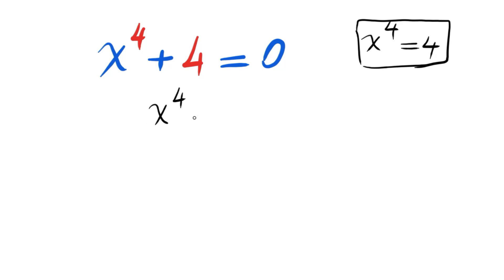Now if we write this as x to the 4 equals minus 4, we will see the roots should be complex. Now we will follow some other methods. We want to factorize this, so we will add and subtract some terms.